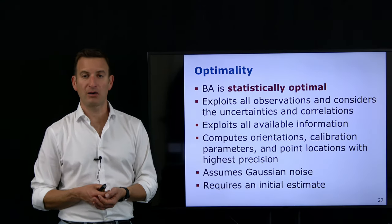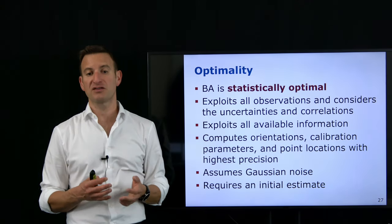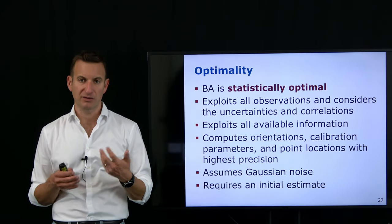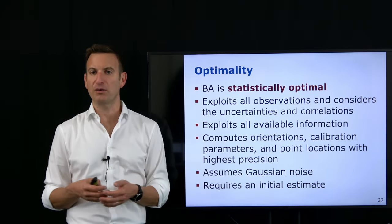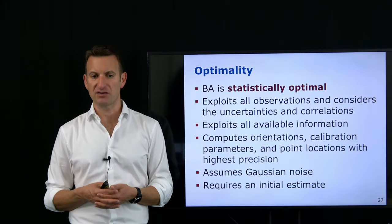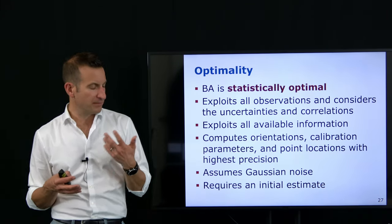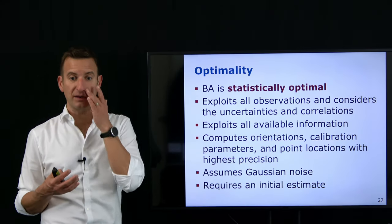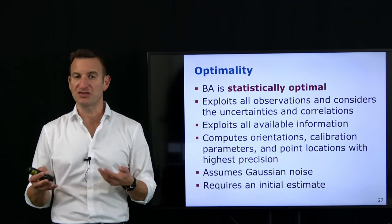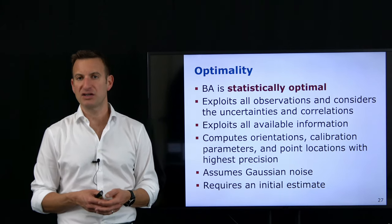A few words about the properties of bundle adjustment. The great thing is that bundle adjustment is a statistically optimal solution under certain assumptions. Statistically optimal means there is, in a statistical sense, no better way for solving it. Bundle adjustment exploits all the observations we have taken and considers all the uncertainties and potential correlations. If we can specify them, the system can take them into account, using all available information to estimate orientation and 3D point parameters at high precision.